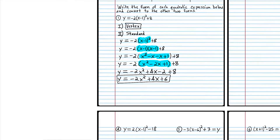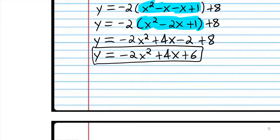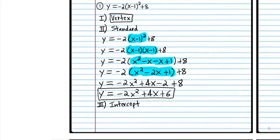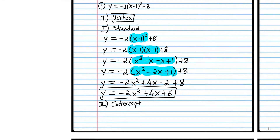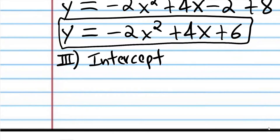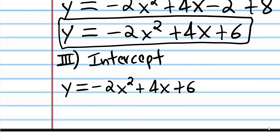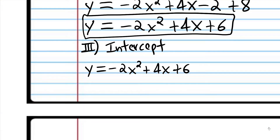Now on to step number 3: we're going to convert to intercept form. I'll title that step 'intercept.' To do this, we're going to start with standard form — the form we left off with — because that's just the easiest way to do it. What we're going to do is factor out negative 2.